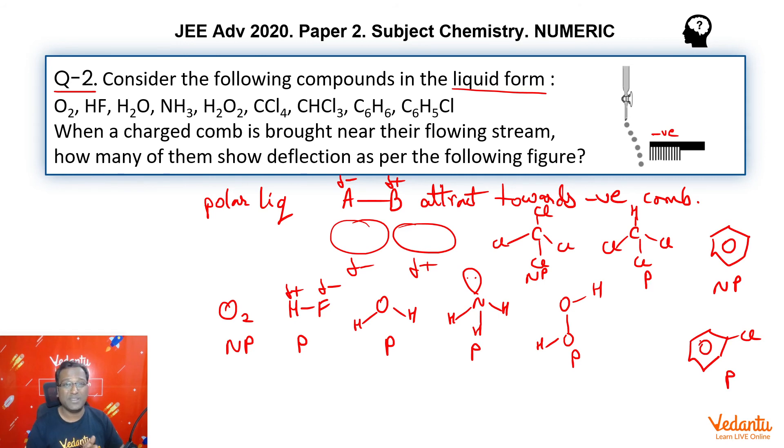So how many of these liquids will deflect towards the comb? All the polar ones. So 1, 2, 3, 4, 5, and 6. So the answer here is 6.